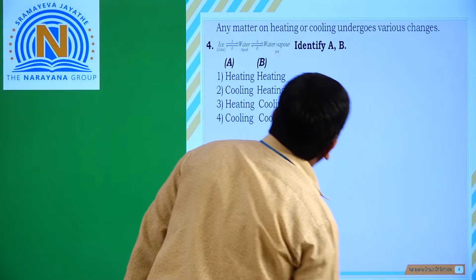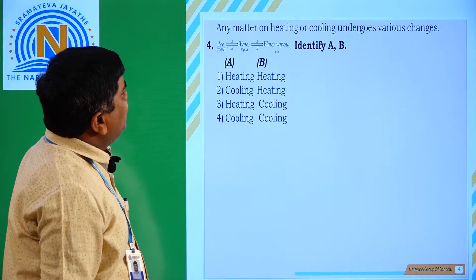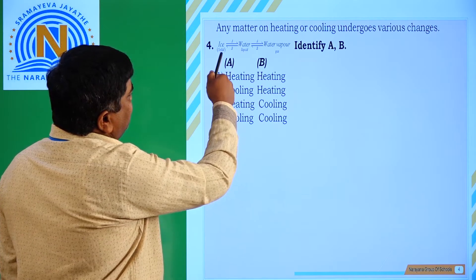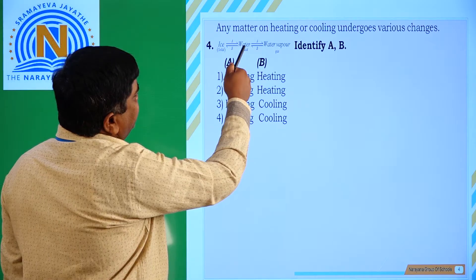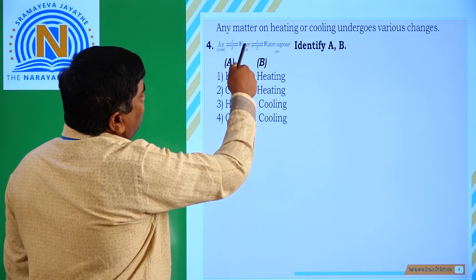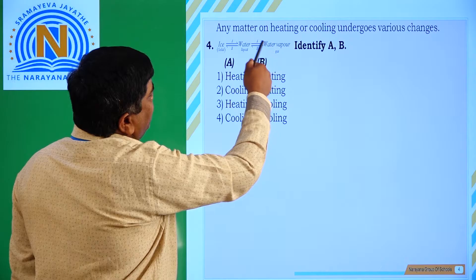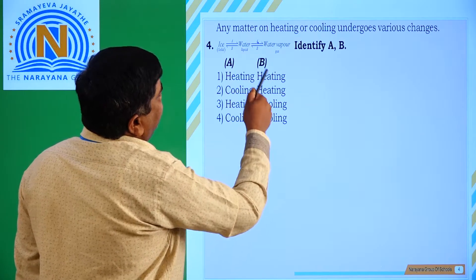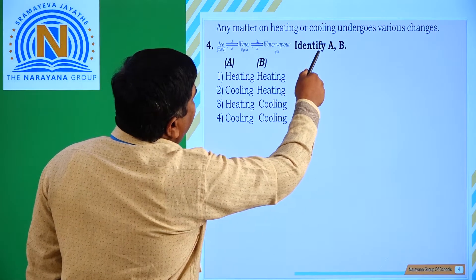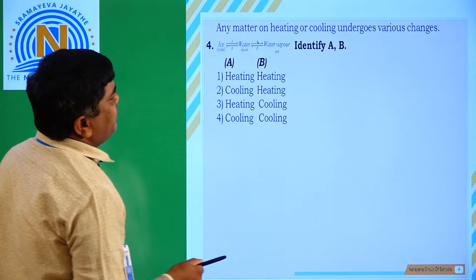Question number 4: Ice in solid state changes to water in liquid state — this is A. Water in liquid state changes to water vapour — this is B. Identify A and B.